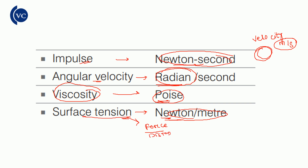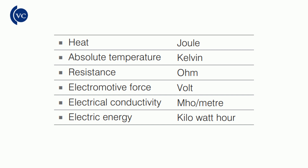Surface tension means Newton per meter. Heat — the unit of heat is Joule. Work, energy, and heat all share the same unit, which is Joule.